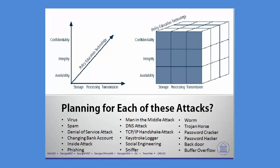Welcome back. It's time to continue our look at planning for different types of attacks — these 18 notorious types of attacks. What we're going to do this time is look at that middle column and talk about man-in-the-middle attack, a DNS or domain name service attack, a TCP/IP or transport control protocol internet protocol handshake attack, keystroke logger, social engineering, and sniffer as the different attack vectors. We're also going to compare them against the tools we have — policy, education, and technology — to discuss what would be the most appropriate mechanisms for addressing each type of attack.